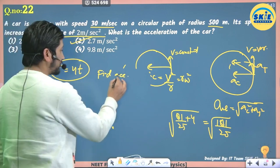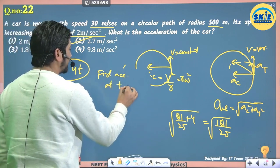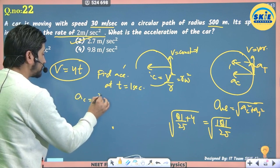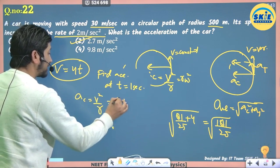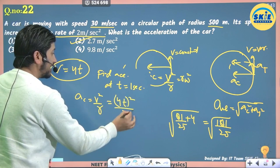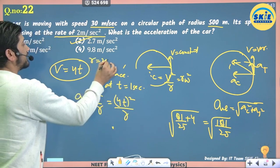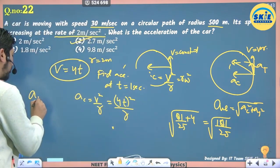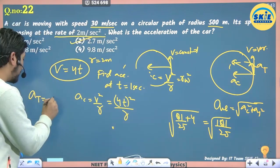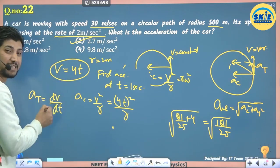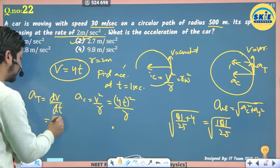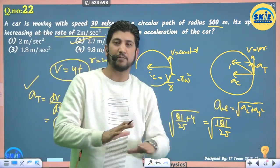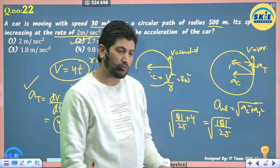Car moving on a circular path: speed 30 m/s, radius 500 m, speed increasing at 2 m/s² (tangential acceleration). Centripetal acceleration = v²/r = 900/500 = 9/5 m/s². Net acceleration = √((9/5)² + 2²) = √(81/25 + 4) = √(181/25) ≈ 2.7 m/s².